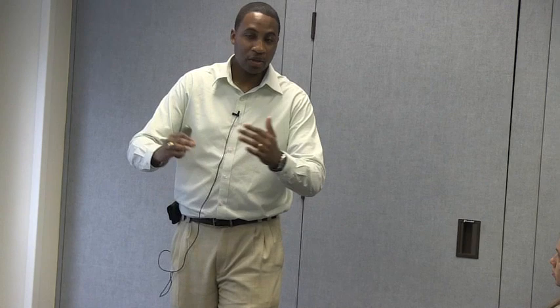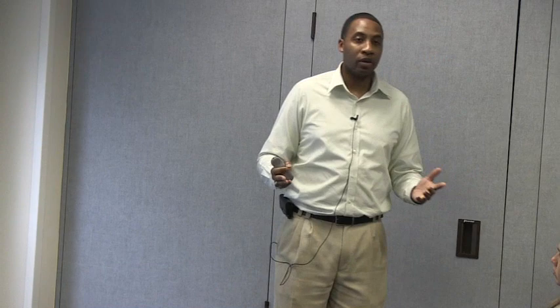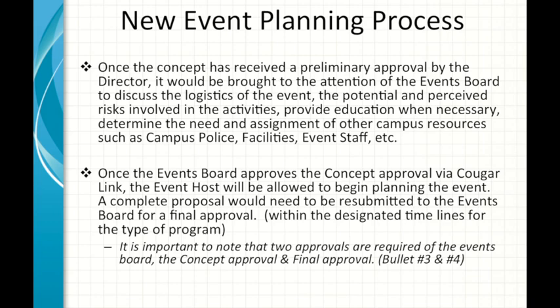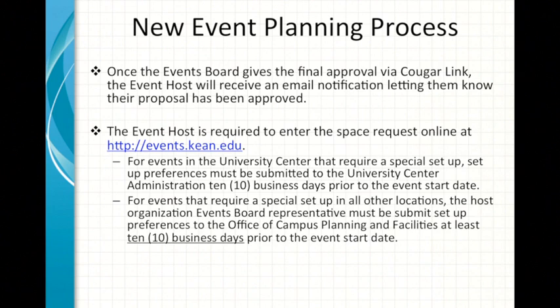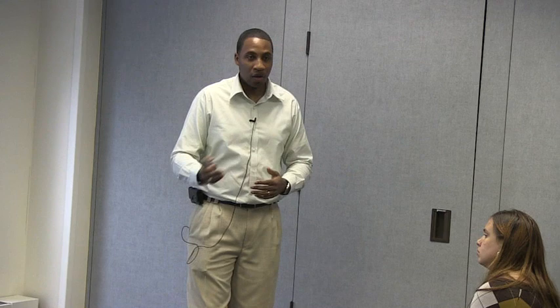You need to submit paperwork saying this is something we're interested in doing — a safe sex workshop — and these are some of the dates we want to do it. Submit that through Google Link to the director, whether that's in Student Government, Center for Leadership and Service, or Alex. They'll review it and, if they don't foresee any issues, bring it to the events board's attention. Then you submit the entire packet to the events board, including security agreements, the reservation, the date, and all other details. The events board will review it, make sure there's no perceived risk and all paperwork is complete, and then approve it. You'll get an email notification.